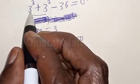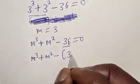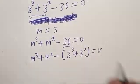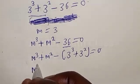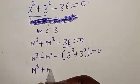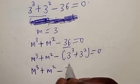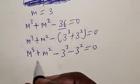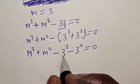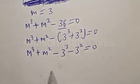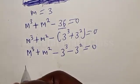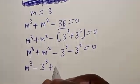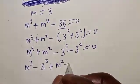Since 3³ plus 3² equals zero, we have m³ plus m² minus 3³ minus 3² is equal to zero. Comparing terms, we have m³ and 3³, also m² and 3². By comparison, we have m³ minus 3³ plus m² minus 3² equal to zero.